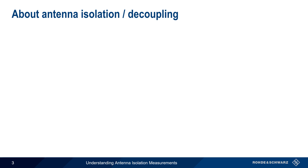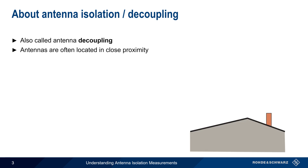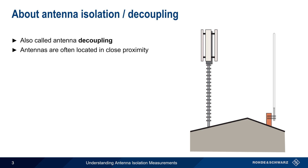Let's start by defining antenna isolation, also sometimes called antenna decoupling. In the modern world, antennas are often installed in close proximity to other antennas — for example on the roof of a building, on a tower, or on a vessel such as a ship or an aircraft. Note too that antennas are often co-located within a device, such as a smartphone with multiple internal or integrated antennas.